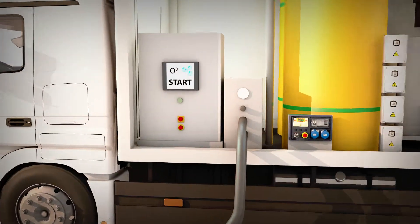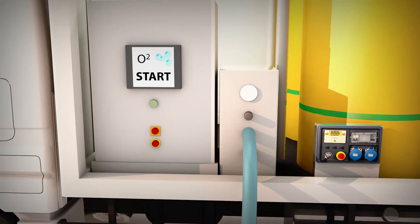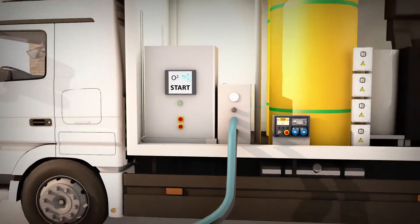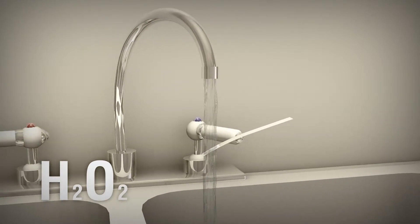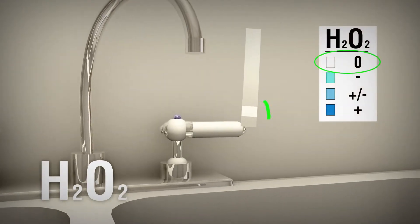In the next phase, the entire system is rinsed with cold water and air until all the pipes are completely clean. Using a special strip, we check whether all H2O2 has been rinsed out of the pipes.